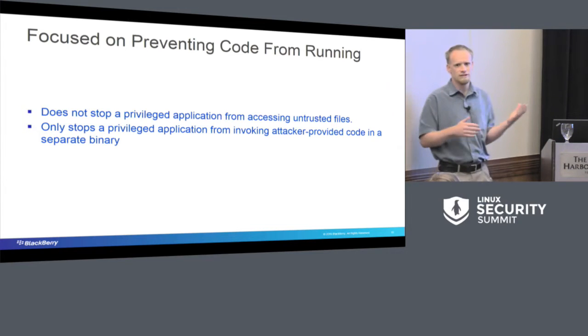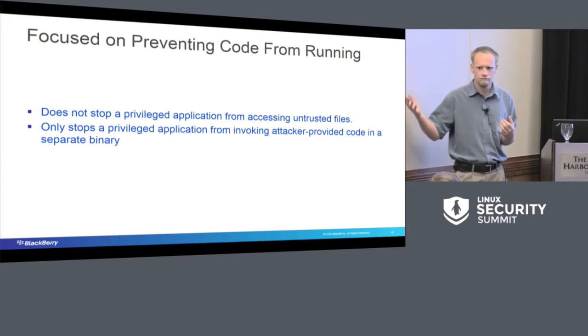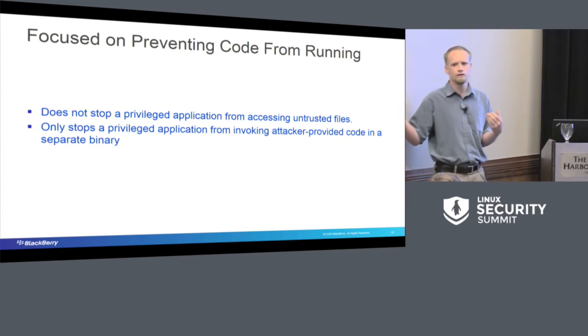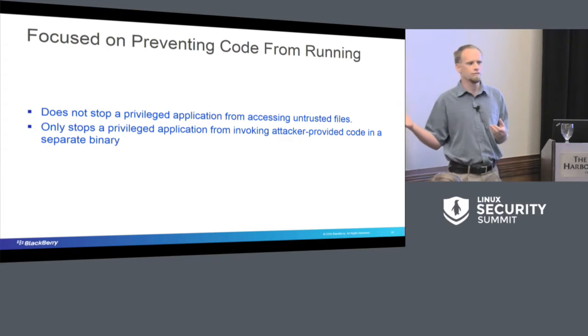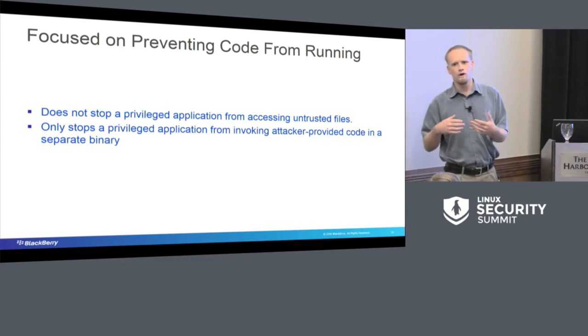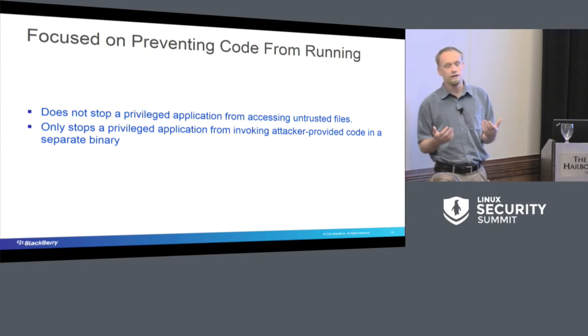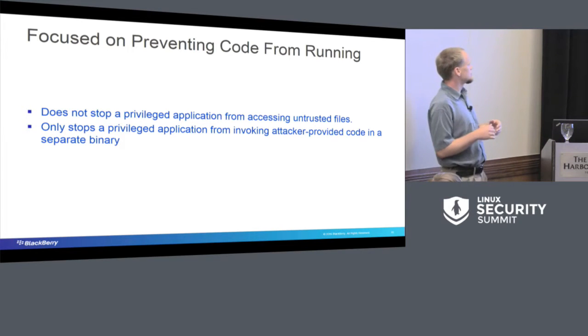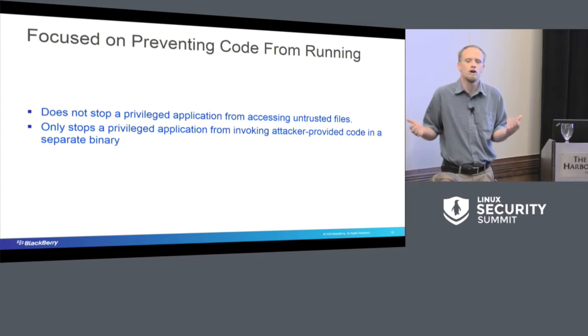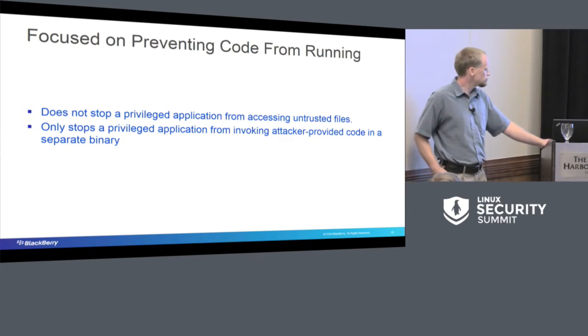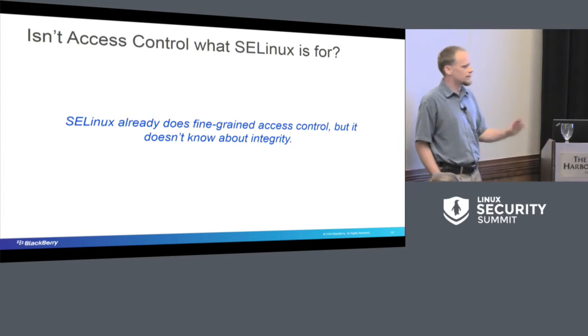It doesn't stop a privileged application from accessing untrusted files. The only thing it does is stop them from running. And so if we wanted to expand this and we wanted to go more general, what could we do? We could try and address these sorts of problems. What is the intersection between integrity protection, DM Verity or whatever else you're using? In theory, we could use a file-based integrity protection where you could have certain files on a file system that are integrity protected. Maybe we want to give them different permissions.